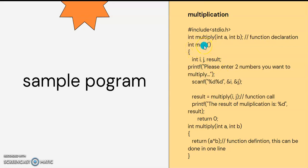If you have the main function, the main function will return an integer value. If we open it, we will get the multiplication. We will publish the numbers and the logic. The two numbers will be provided — the values we want to multiply — then output the result.